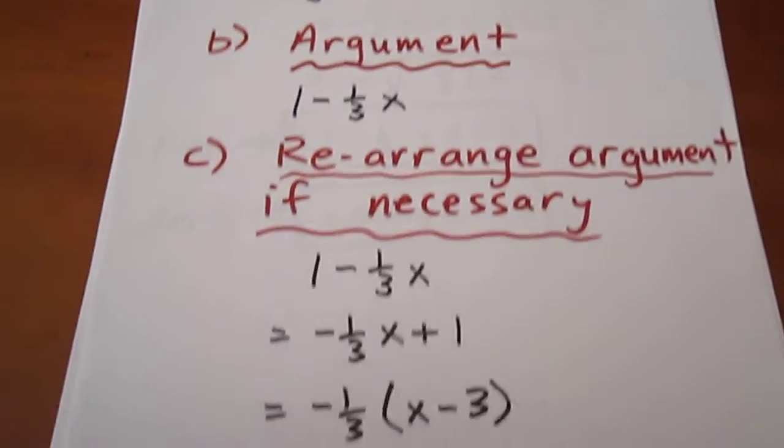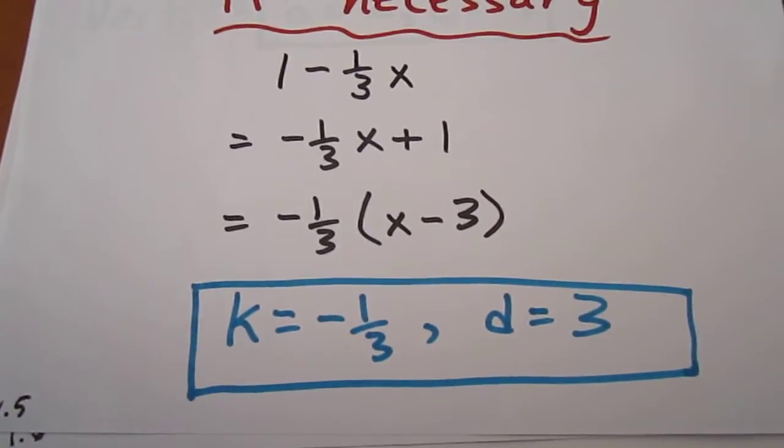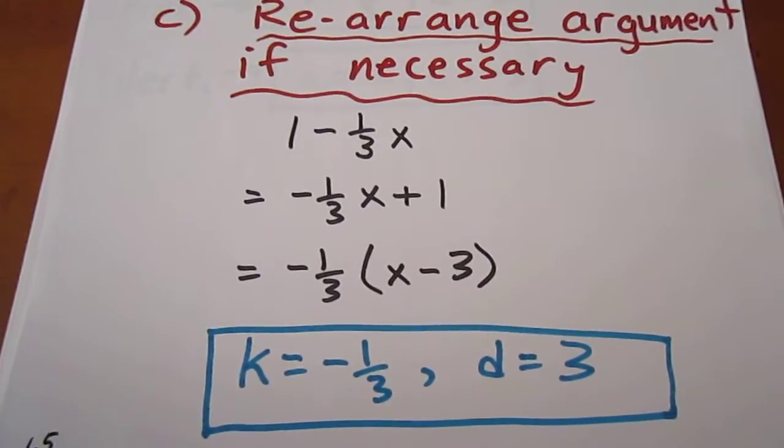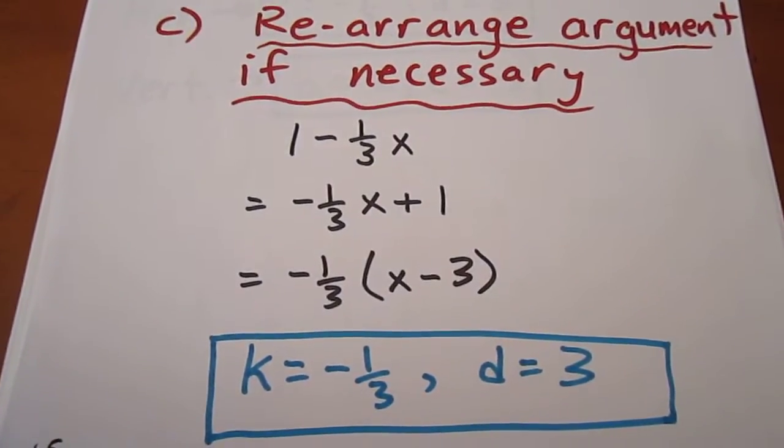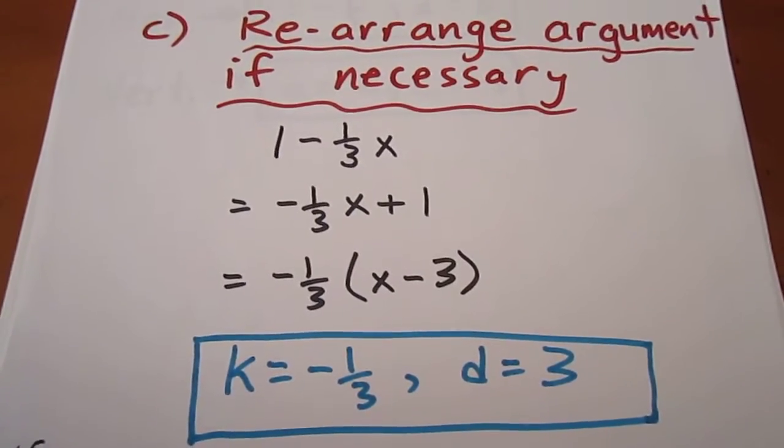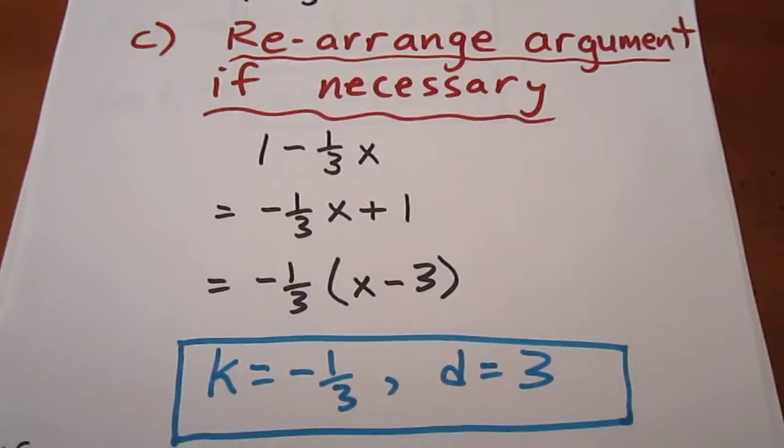We can rearrange that so that our argument is expressed in the form k times x minus d. This tells us that k is negative 1 third and d equals 3. That gives important information about horizontal transformations.